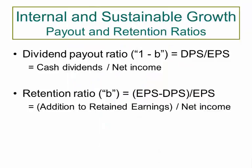Now I'd like to move on to the internal and sustainable growth rates—the last concept for this lecture. Remember that when you get net income or earnings, you can either use that to help fuel growth within the company through retained earnings, or kick those earnings back out to your shareholders in the form of dividends. The percentage of dividends over net income is called your dividend payout ratio, also known as 1-B. Your retention ratio—retained earnings over net income—is going to be B.